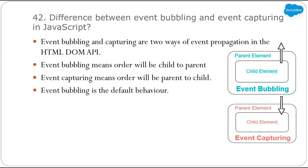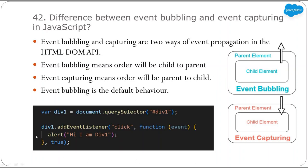The default behavior is event bubbling. But if you want to use capturing, you need to pass the useCapture parameter as true while registering the event — as shown in this image. If you pass true, the parent event handler will call first, then the child event handler, so the order will be parent to child.